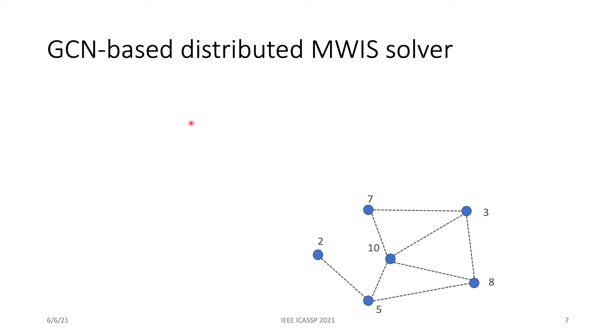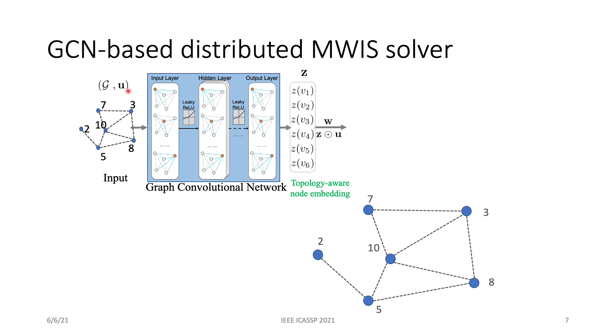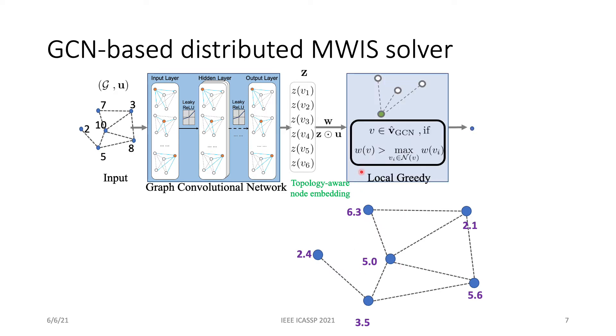Our solution works in two steps. First, the GCN and utility will be fed into the graph convolution network or GCN to generate topology-aware node embedding Z. So here in this example, it's the green number. This embedding will upscale isolated nodes and downscale central nodes because central nodes have more neighbors. Then we get the topology-aware utilities. These utilities together with the graph will be put into a local greedy algorithm to find the ultimate solution.